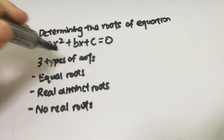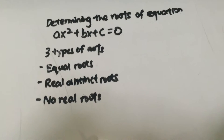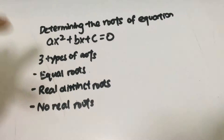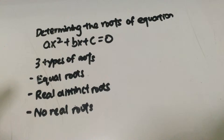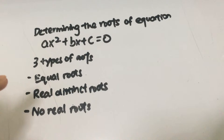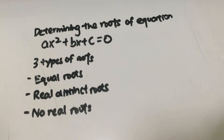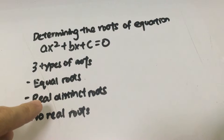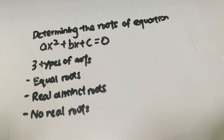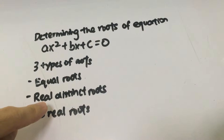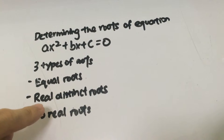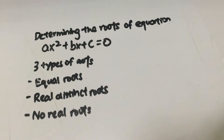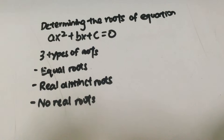So what does it mean by roots? Roots basically means values of x itself. Because what we are trying here is that we are trying to solve x. So basically, when we solve a particular quadratic equation, there are three kinds of scenarios. One, equal roots, which means you can only have one solution of x. The second type is real distinct roots, which is when you've got two solutions of x.